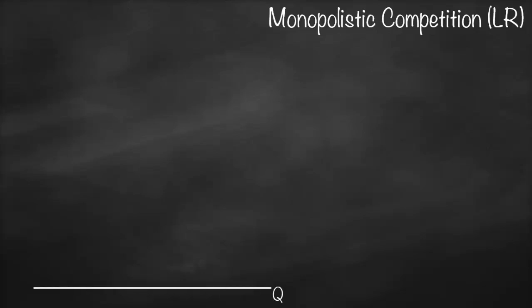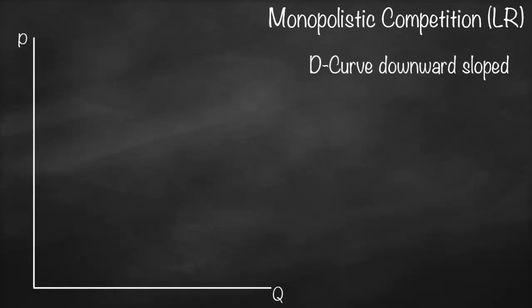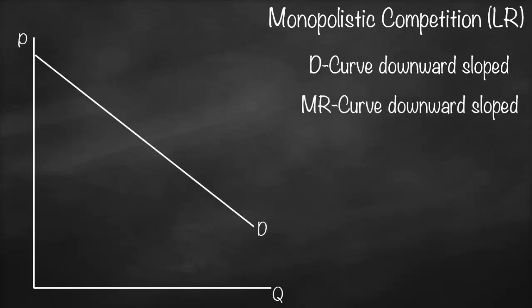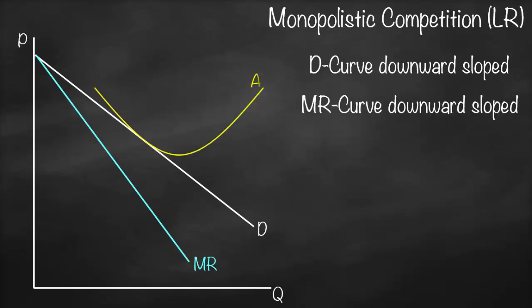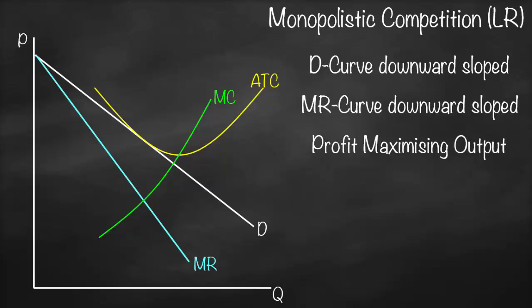Our x-axis is the quantity, our y-axis is the price. Our demand curve is downward sloped, our marginal revenue is downward sloped and it's below our demand curve. This is our average total cost, which is U-shaped. This is our marginal cost, and remember that marginal cost intersects average total cost always at its minimum.